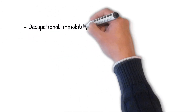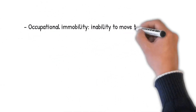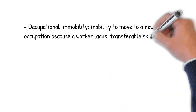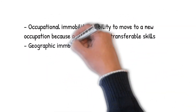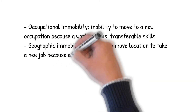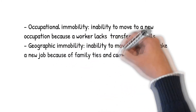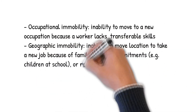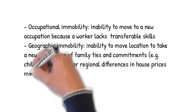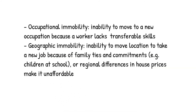Other causes of market failures include occupational immobility — the inability to move to a new occupation because a worker lacks transferable skills — and geographic immobility, the inability to move location to take a new job because of family ties and commitments, such as children at school, or because regional differences in house prices make it unaffordable.